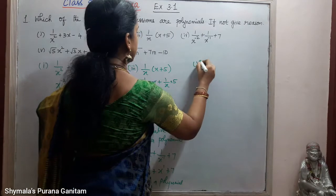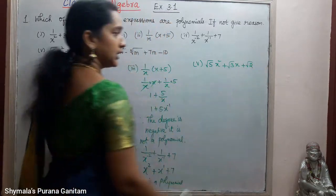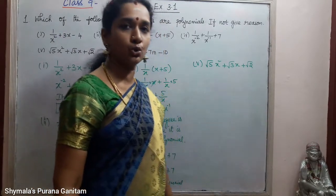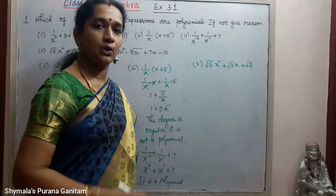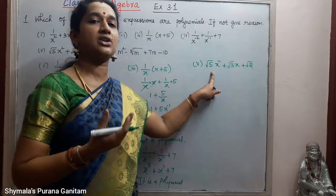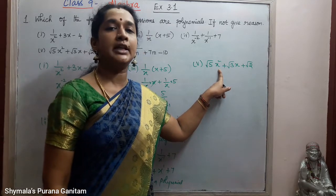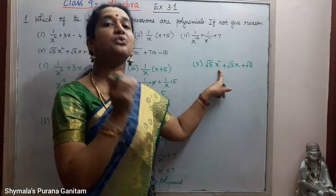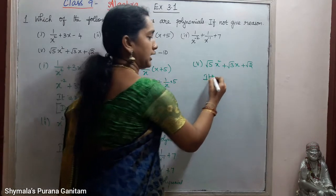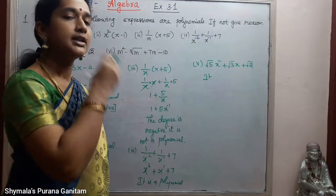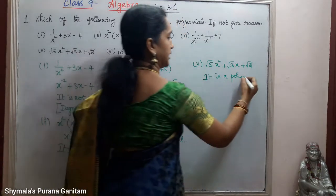Fifth one is √5·x² + √3·x + √2. We need to check the degree only for the variable. Here √5 is a constant — the constant can be a fraction or decimal, any number. We only check the degree of the variables: x² has power 2 and x has power 1, both positive. So it is a polynomial.